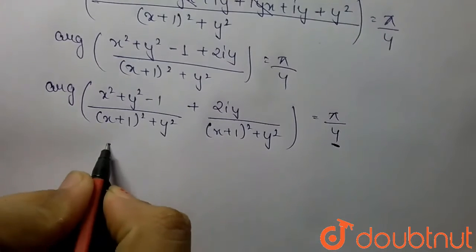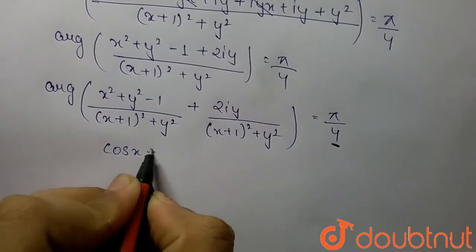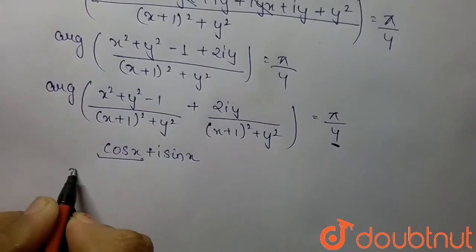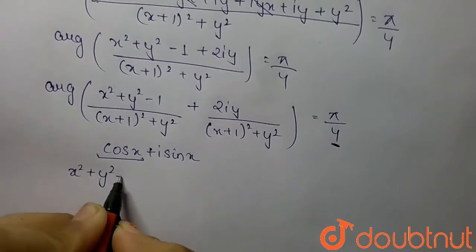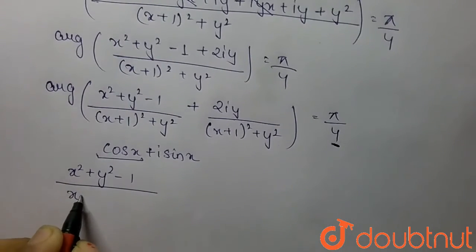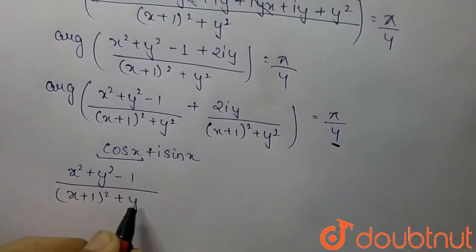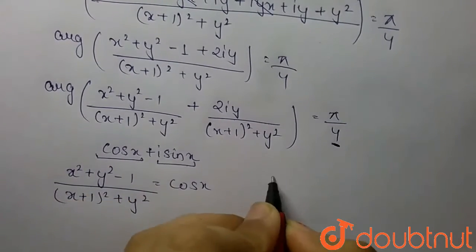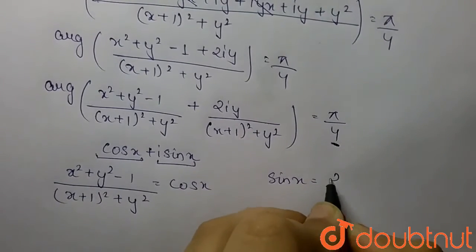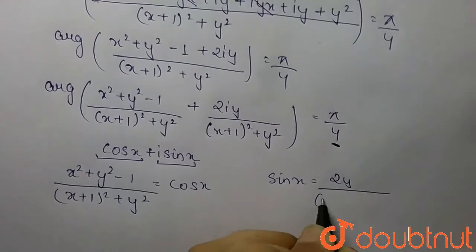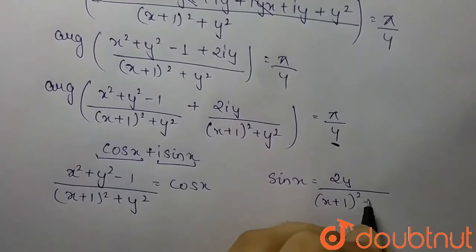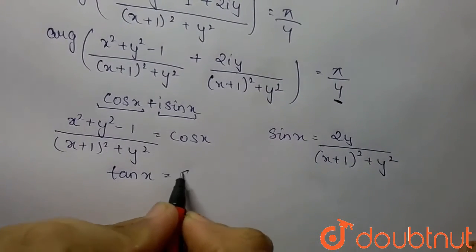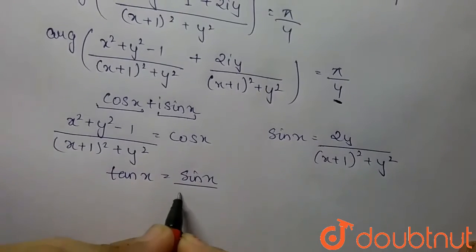In polar form, cos θ = (x² + y² - 1)/((x+1)² + y²) and sin θ = 2y/((x+1)² + y²). The value of tan θ equals sin θ divided by cos θ.